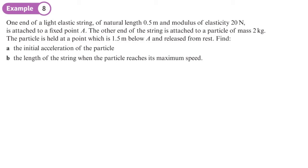Now, one end of a light elastic string of natural length 0.5 metres, so there's L, and modulus of elasticity, there's lambda, is 20, is attached to a fixed point A. The other end of the string is attached to a particle of mass 2 kg. The particle is held 1.5 metres below A and released from rest.